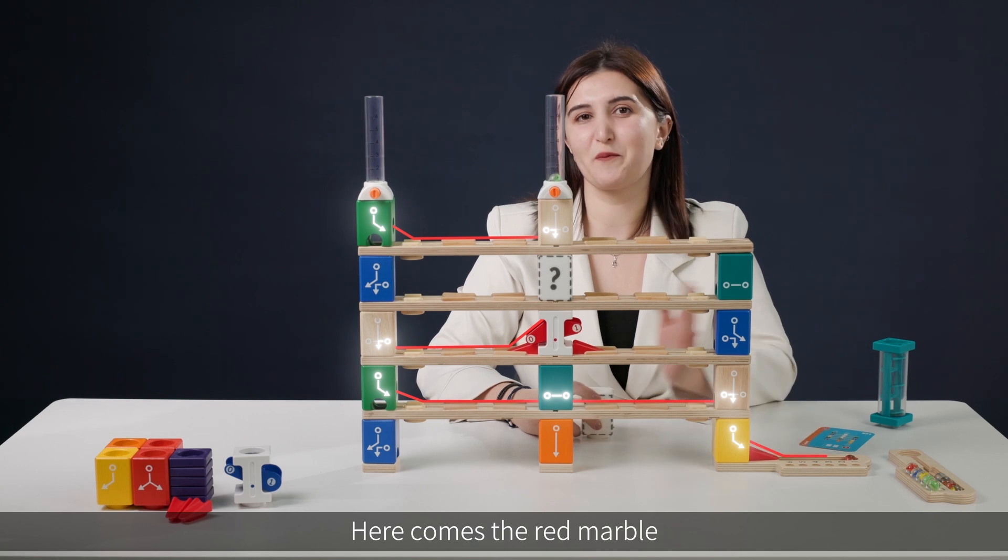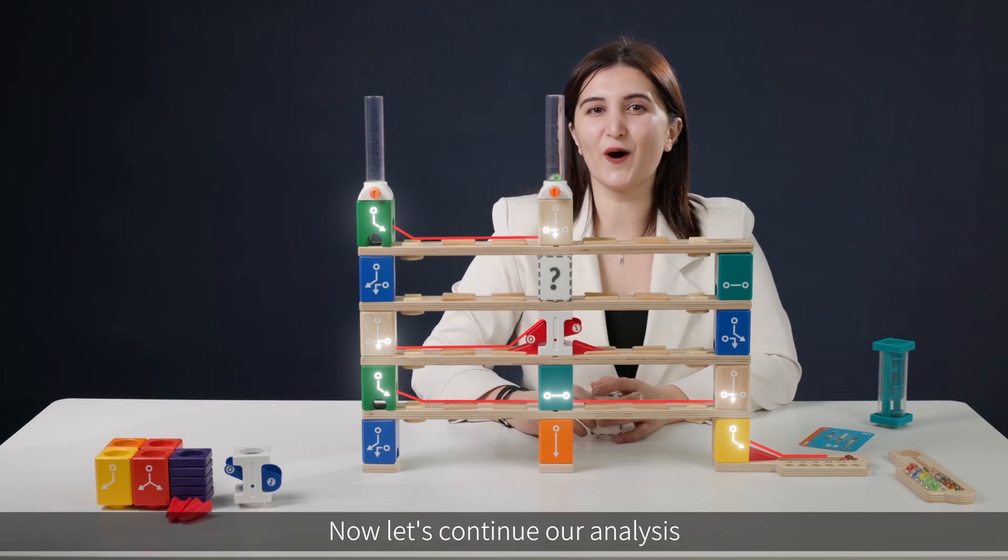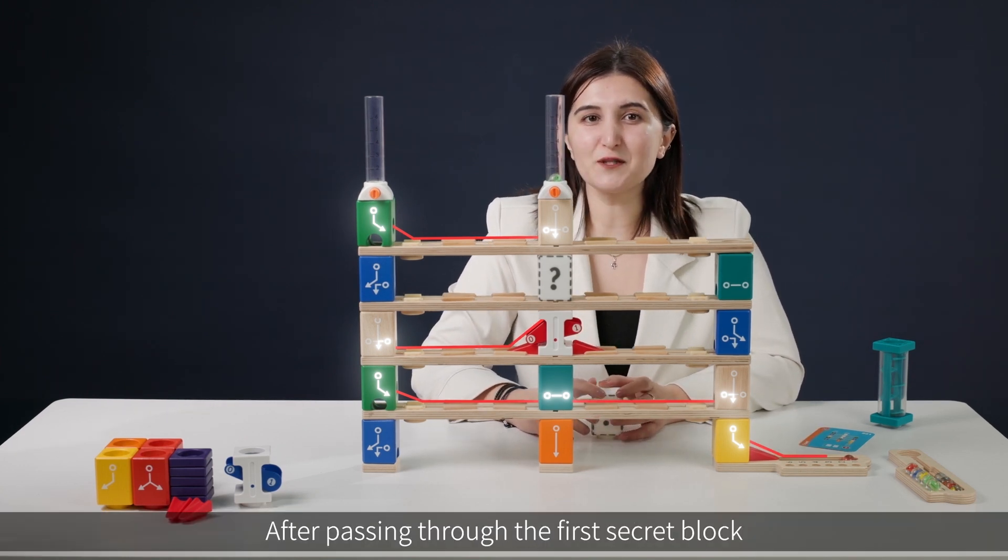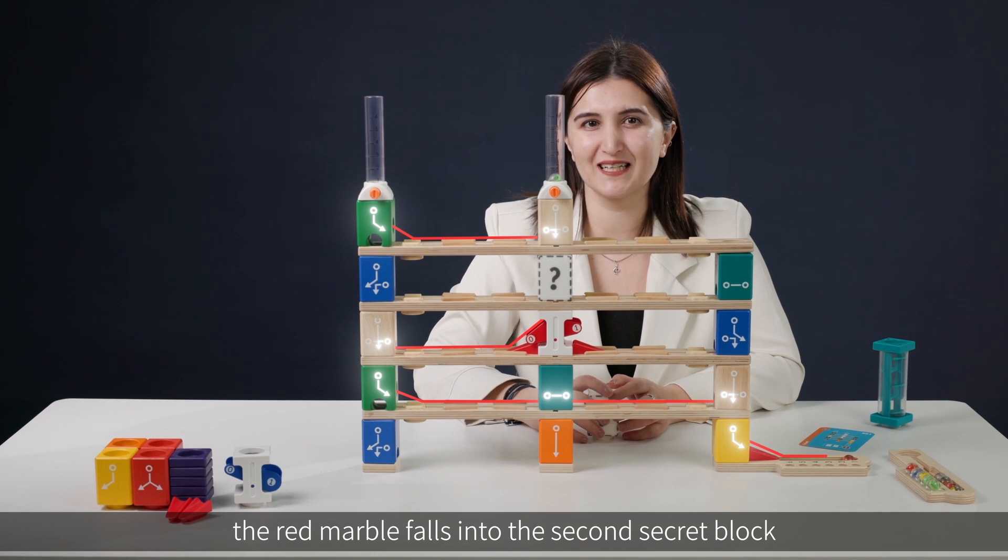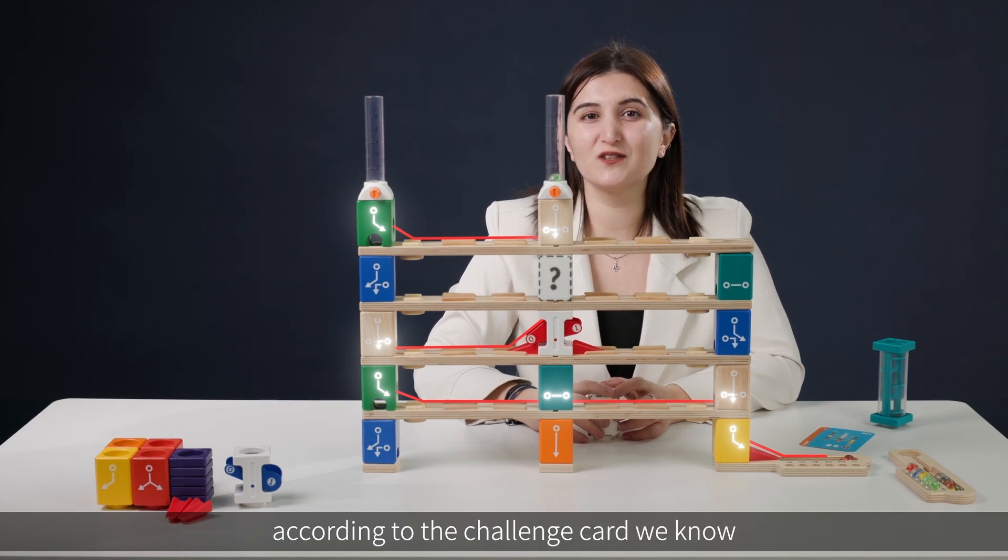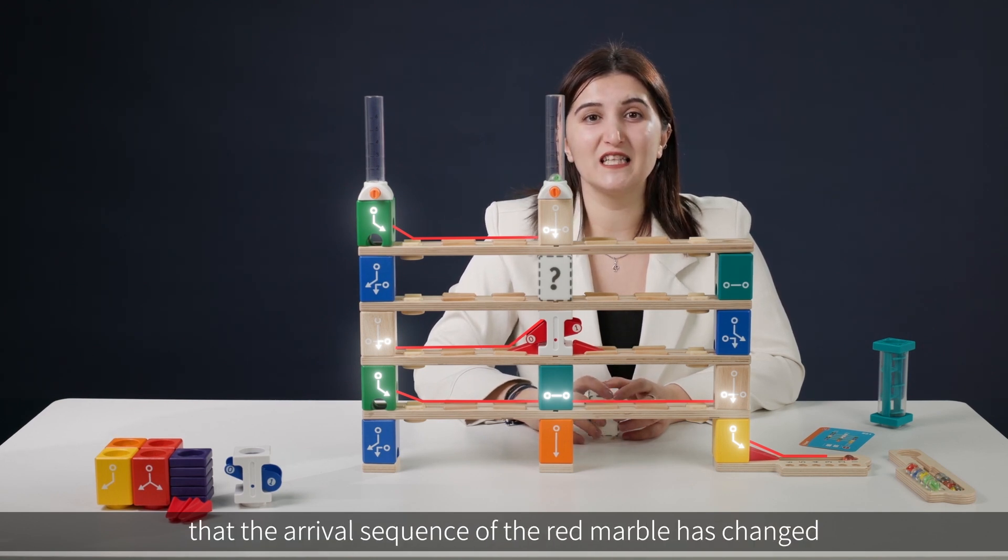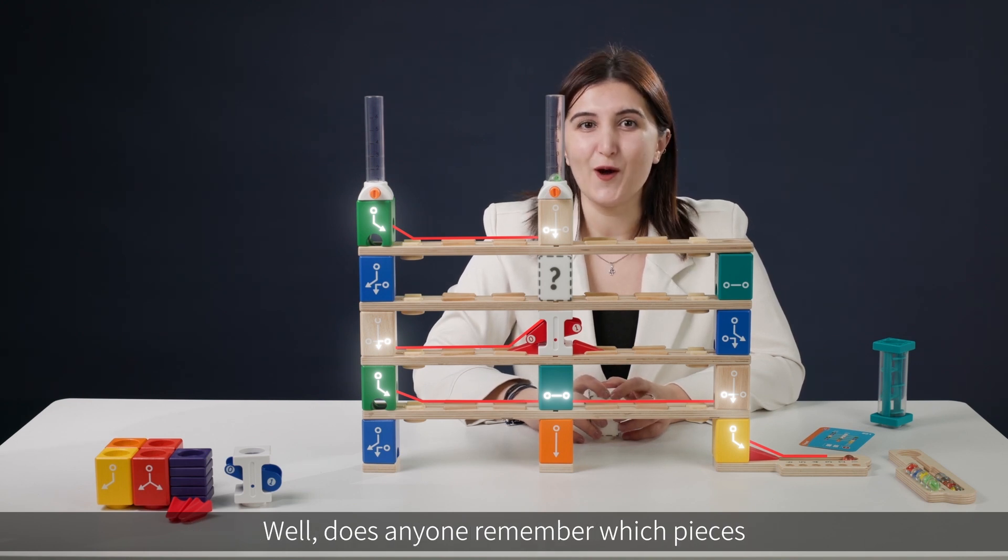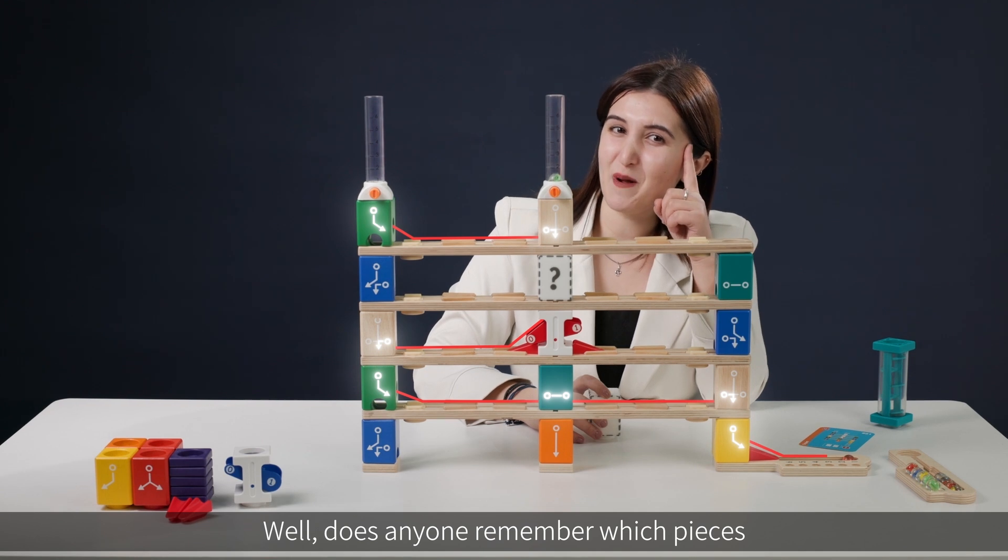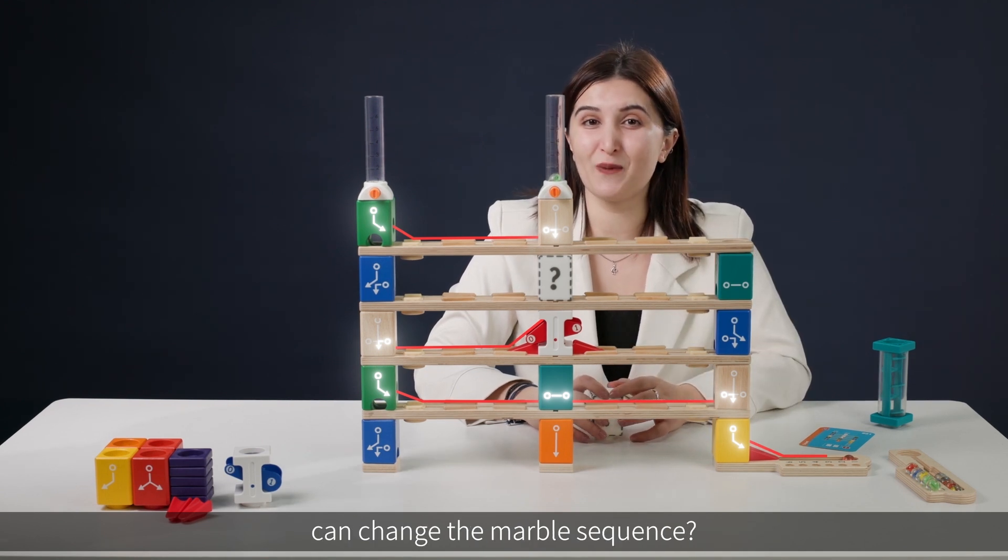Here comes the red marble. Now let's continue our analysis. After passing through the first secret block the red marble falls into the second secret block. However, according to the challenge card we know that the arrival sequence of the red marble has changed. Well, does anyone remember which pieces can change the marble sequence?